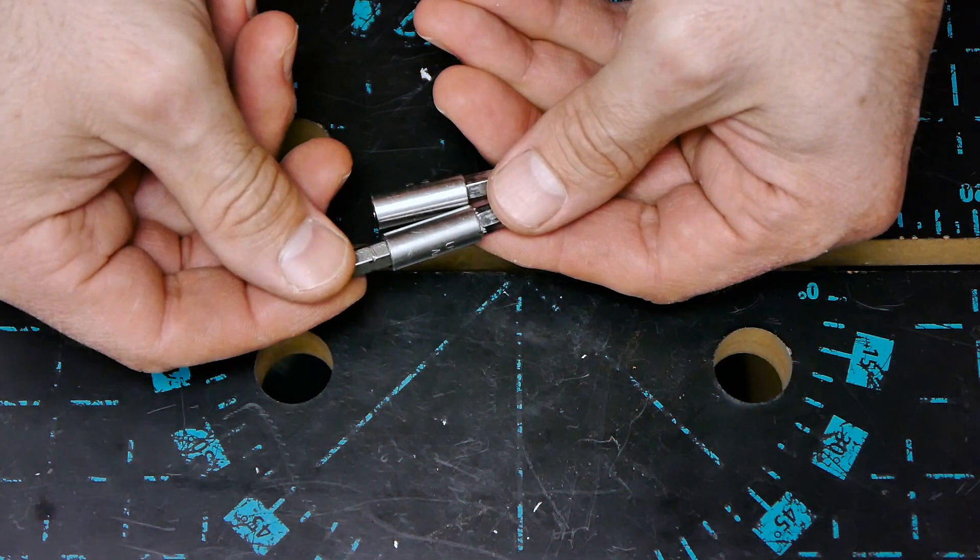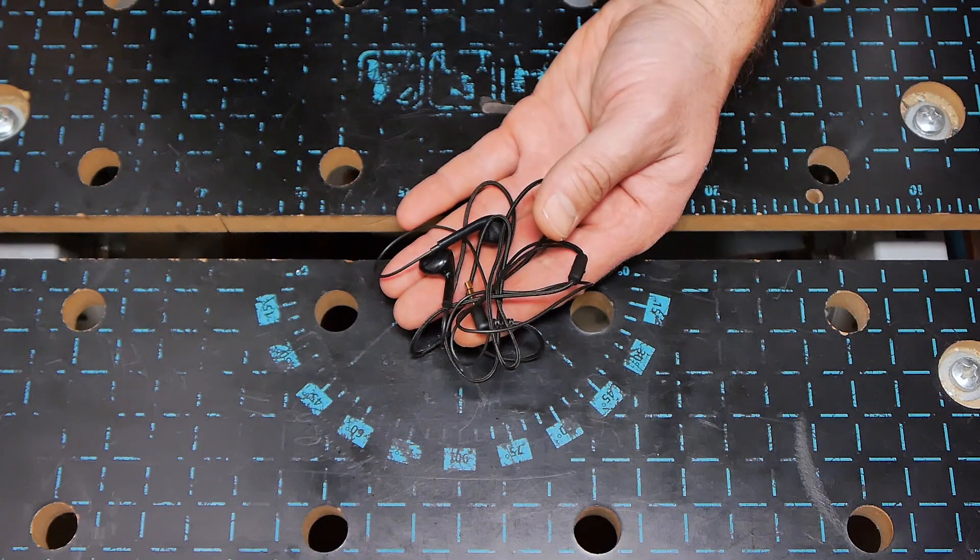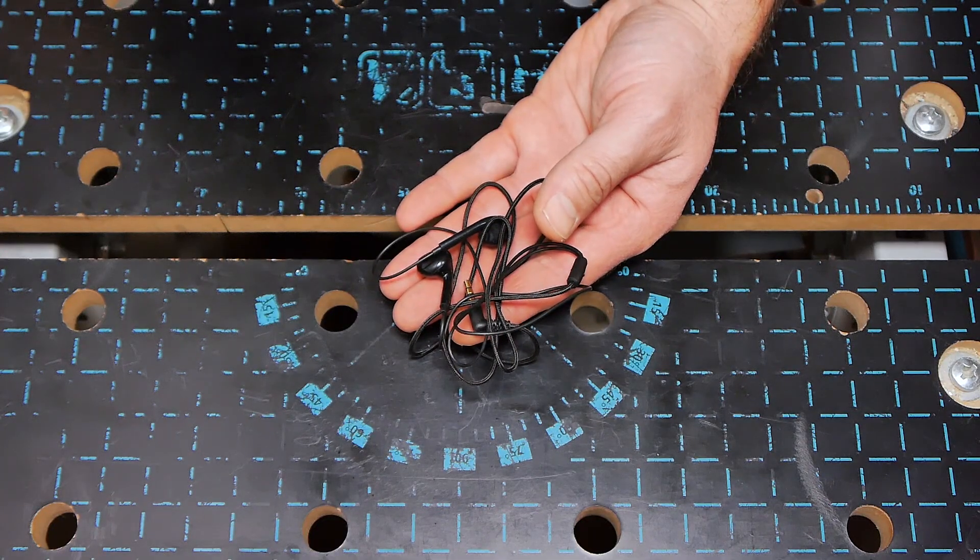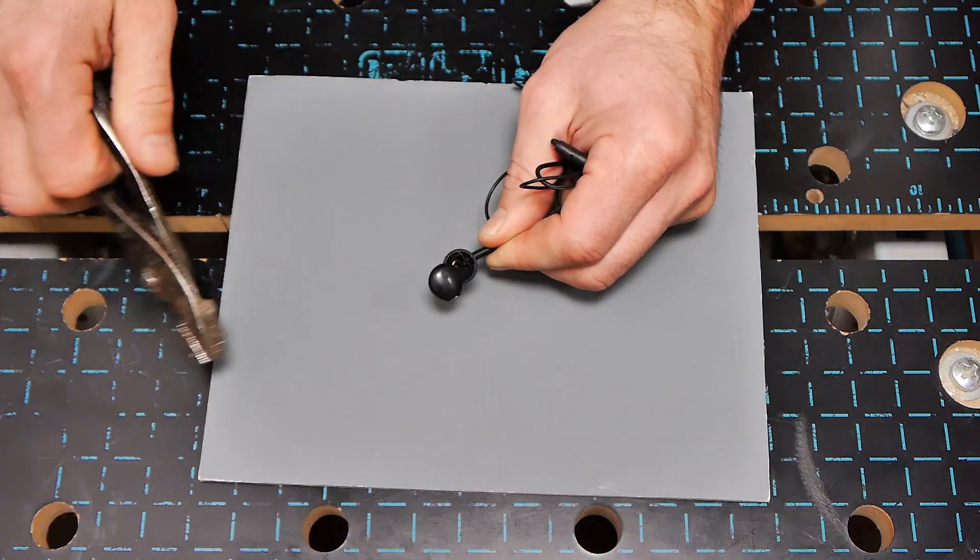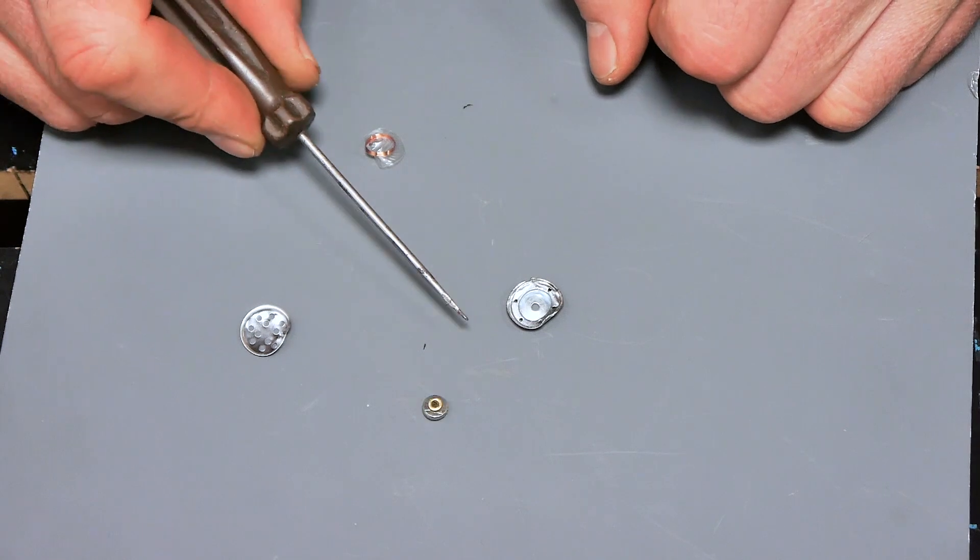If a magnet is out of the bit holder, there is a solution. We take old headphones, not vacuum ones, but usual earphones, and disassemble them. There is a neodymium magnet inside, which is ideal for the bit holder.